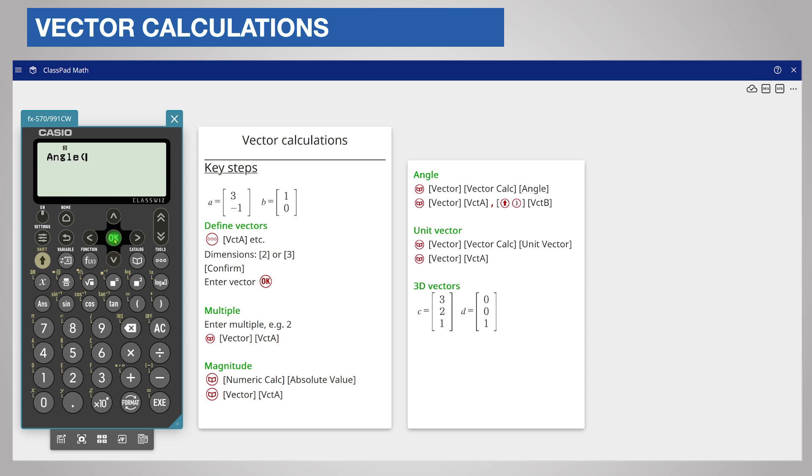Now you need to enter your two vectors. Do this using the catalog key. You press the catalog key, vector, and vector A. Enter a comma which is shift close brackets and then choose vector B from the catalog menu as before.